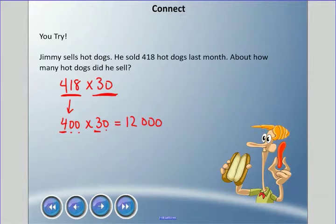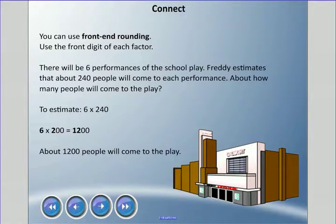Another way we can use estimating is to use something called front-end rounding, and that's just using the front digit of each factor. There'll be six performances of the school play. Freddy estimates that about 240 people will come to each performance. About how many people will come to the play? Remember there's six performances times 240 people. We're going to change that 240 to 200, so 6 times 2 is 12, we have the two zeros. About 1200 people will come to the play. Please remember this is an underestimate because we lowered the 240 to 200.